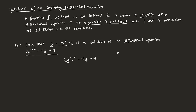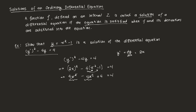We find y prime, or dy/dx, which by the power rule equals 2x. We then substitute: (2x)² - 4(x² - 1) = 4, which gives 4x² - 4x² + 4 = 4. Notice the 4x² terms cancel out, and we're left with 4 = 4.